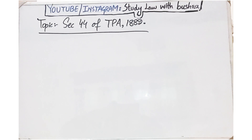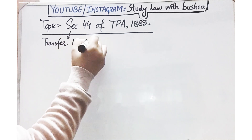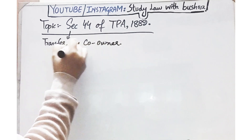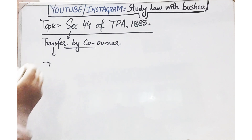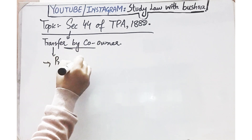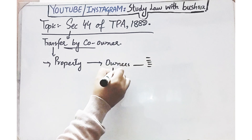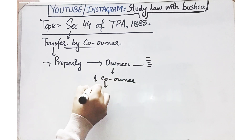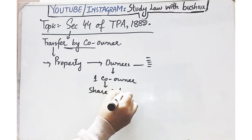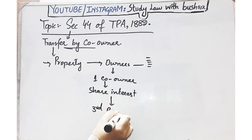Section 44 of Transfer of Property Act basically deals with transfer of property by one co-owner. This section discusses a specific situation where we have a property with more than one co-owner — not just one owner but many owners — and one of those co-owners is transferring their share or interest to a third person.